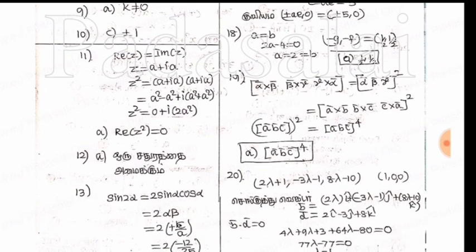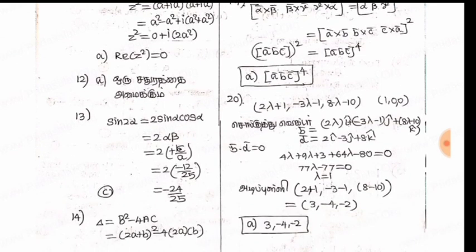12th one is A, this is a thumbnail media, English media from a square. 13th one is C, minus 24 by 25.